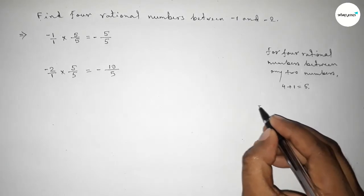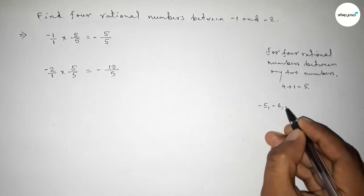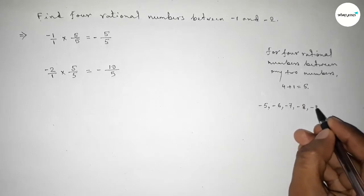Between -5 to -10, we can get four negative natural numbers: -5, -6, -7, -8, -9, and -10. So these are the four negative natural numbers.